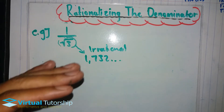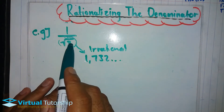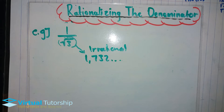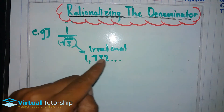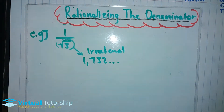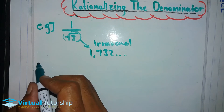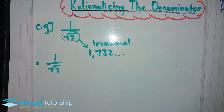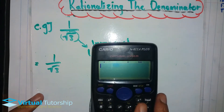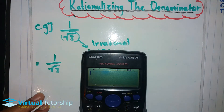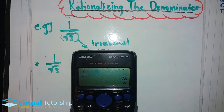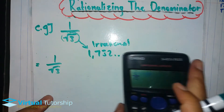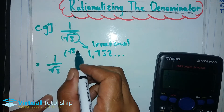The only time we rationalize is when we have a fraction where the denominator is irrational. Rationalizing the denominator basically means converting a denominator from an irrational state to a state of rationality. So for example, 1 over square root 3 becomes square root 3 over 3.